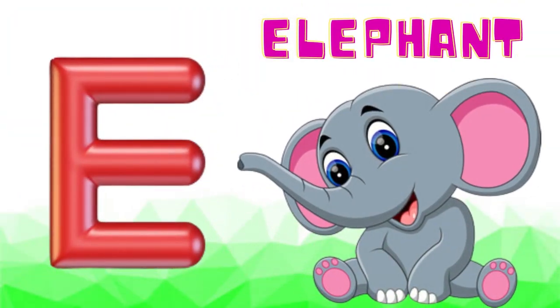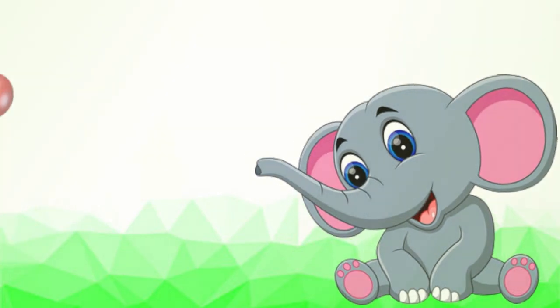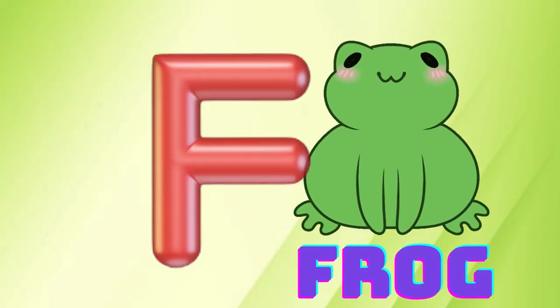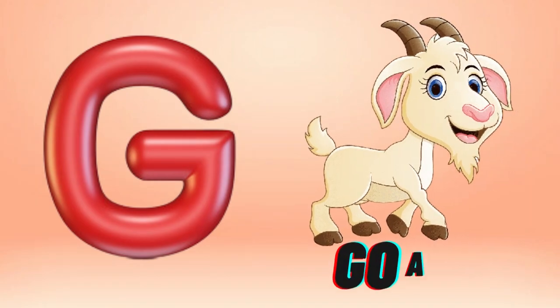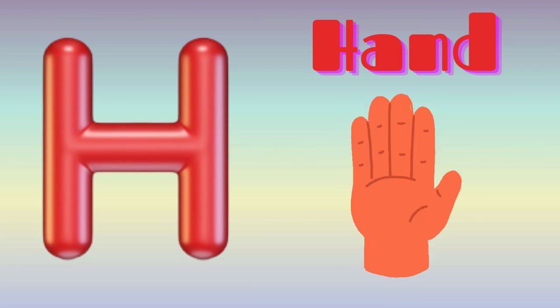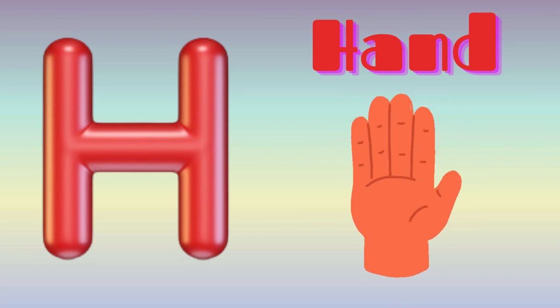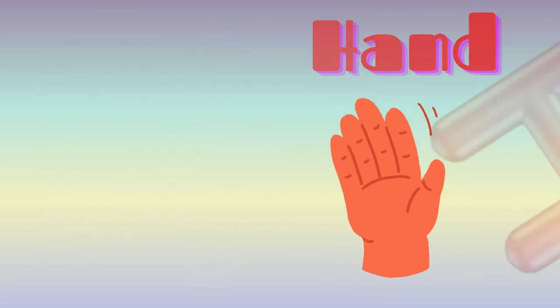E is for Elephant, E-E-Elephant. F is for Frog, F-F-Frog. G is for Goat, G-G-Goat. H is for Hand, H-H-Hand.